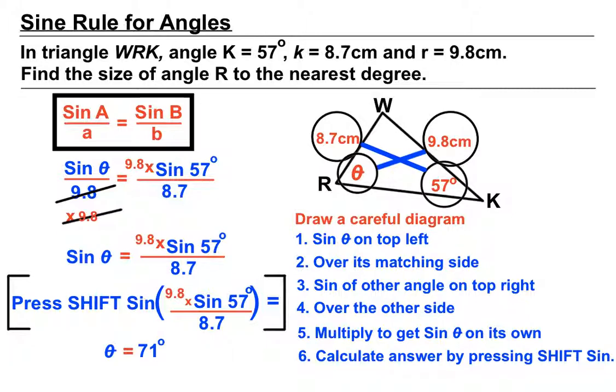We get 71 degrees, which matches our expectation of an angle larger than 57 degrees. The only difference in this example was that we had to carefully draw the triangle ourselves, one step at a time, before applying the sine rule.